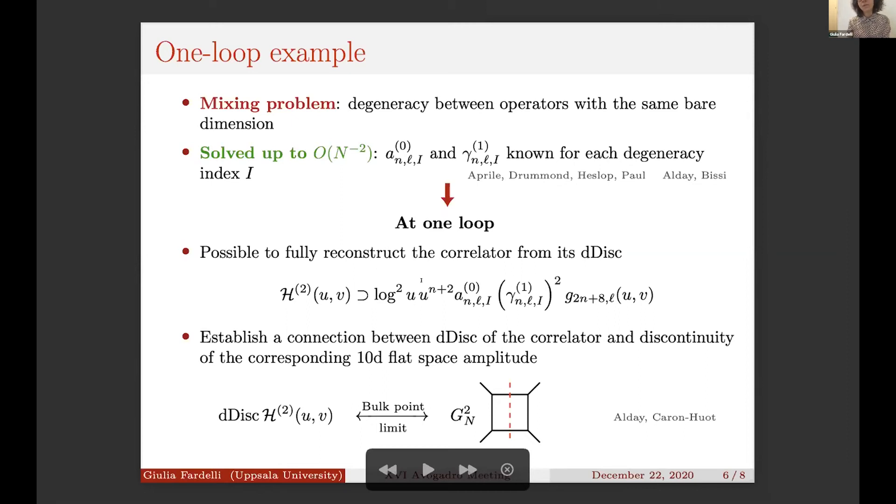Through the inversion formula, this piece fixes completely H_2. Even more interesting maybe is that it was possible to establish a one-to-one correspondence between this double discontinuity and the usual standard discontinuity of the corresponding Feynman amplitude in 10 dimensions, because we are considering this flat space limit. So at this stage, we can see that there is a connection between this double discontinuity and a cut or usual discontinuity, which we know can reconstruct an amplitude through a usual dispersion relation.